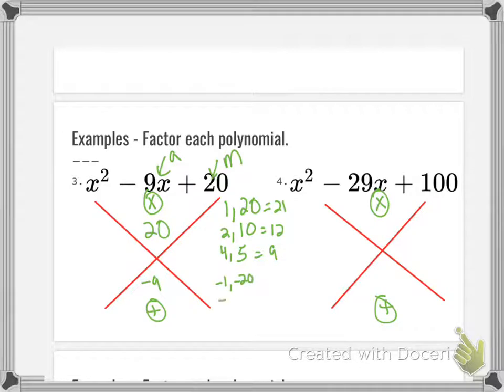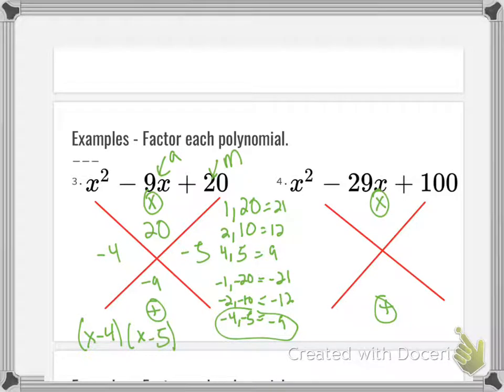What we need is the negative version. So negative 1, negative 20, negative 2, negative 10, negative 4, negative 5. So negative 21, negative 12, negative 9. So the one that we need is that last one, negative 4, negative 5. And you can rewrite this as x minus 4 times x minus 5. You can double distribute it out to verify your answer, but we know it's correct.